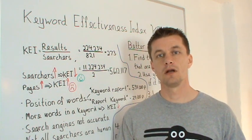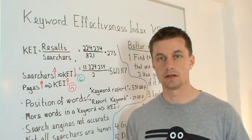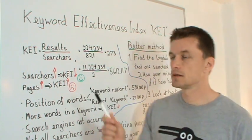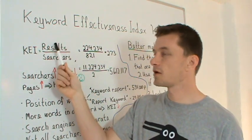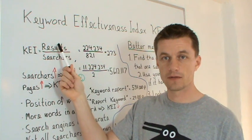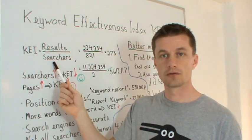So let's look a little bit closer on Keyword Efficiency Index. It is calculated quite simply. You take the number of pages that have this keyword in and divide it by the number of searches.